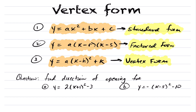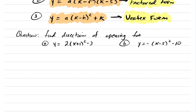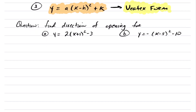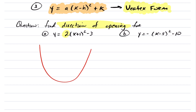Let's take a look first at the idea of the direction of opening of your quadratic — how can you figure out if your quadratic is opening up or opening down? Where you look to decide that is the a value. Notice your a value for vertex form is right here, and because this is in vertex form, the a value here is 2. If your a value is positive, your quadratic will always open upwards.